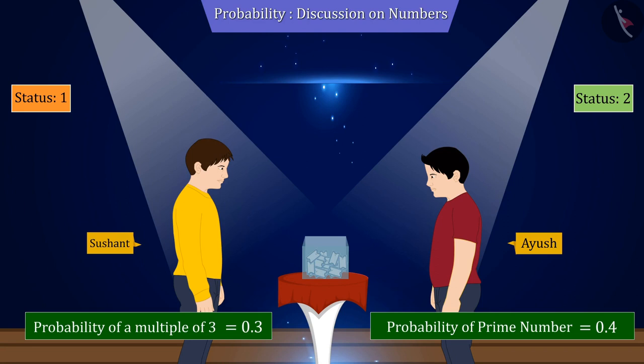Therefore, from the outcomes obtained, we conclude that the highest probability of victory comes from the slip picked by Ayush.